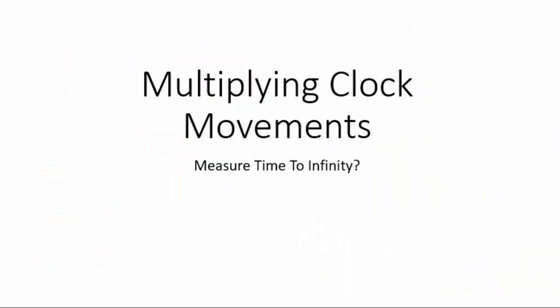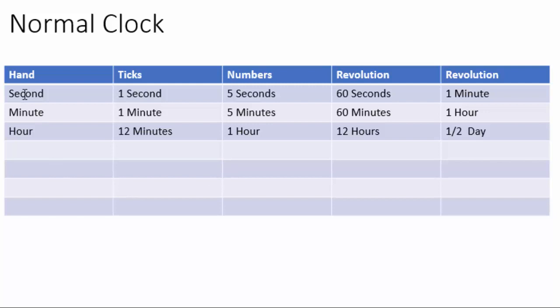Just to reiterate this, because it is really important, I created this table over here showing how we're calculating lengthened time by multiplying clock movements together. Here is your normal clock — you have a second hand, a minute hand, and an hour hand. On the clock face, you have the numbers and the little tick marks between the numbers. The hour hand measures hours. Every number is telling us five minutes when it comes to the minute hand. When it makes one revolution, you get 60 seconds or one minute. The minute hand gives you 60 minutes or one hour at one revolution. And the hour hand gives you 12 hours or half a day.